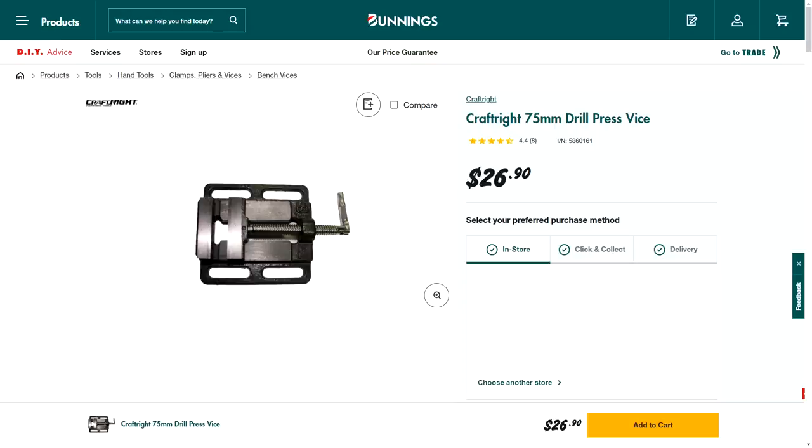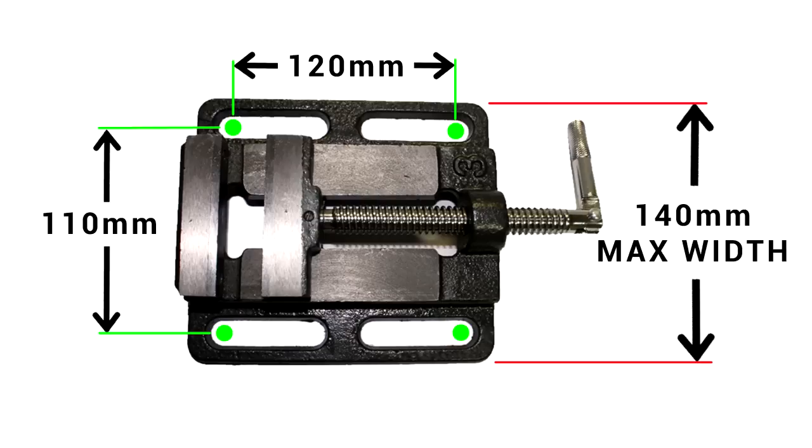Since we're only destructively testing 3D printed parts, we can use an inexpensive drill press vise. If you can't get this exact one where you live, this diagram will give you the dimensions you need to match the hole mounting as well as the maximum width.